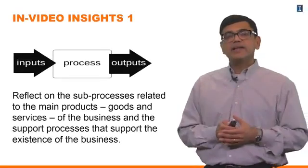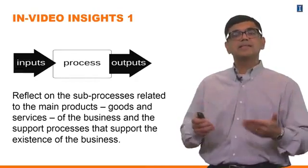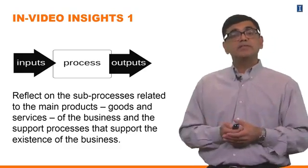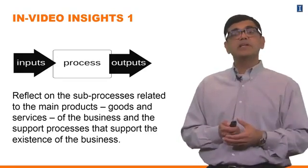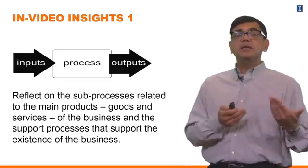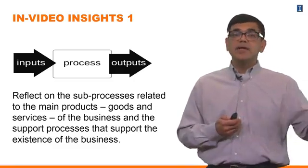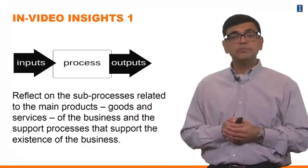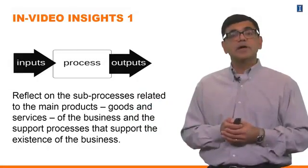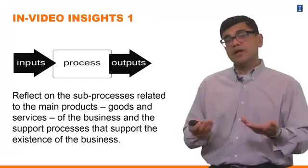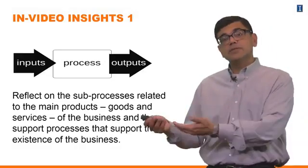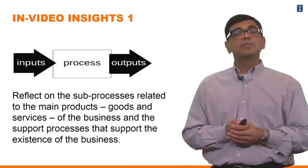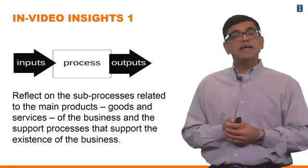Now that you've had a chance to reflect on core processes and support processes, what you may have thought about is probably a manufacturing business — somebody that makes furniture. The main inputs and outputs of their core process are getting wood and other materials and delivering furniture to customers. You could also think about a service — a healthcare organization or a fast food restaurant. They get materials and convert them into food delivered to customers. For a healthcare organization, the input is patients and the output is patients who have been treated.